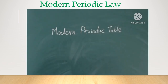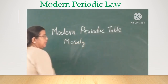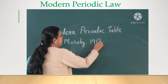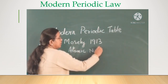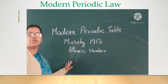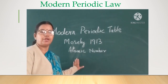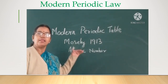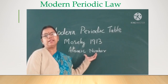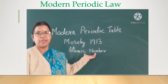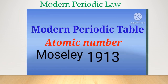In the year 1913, Moseley showed that atomic number of an element is more fundamental than the mass number in the classification model. When he arranged the elements in the increasing order of their atomic number, he found that there is a repetition in the properties of the elements. He said atomic number is more fundamental than the mass number for classifying elements in the periodic table, and all the anomalies or defects in Mendeleev's periodic table were rectified by arranging the elements in the increasing order of their atomic number.